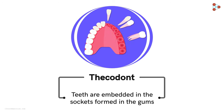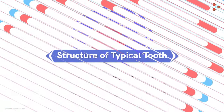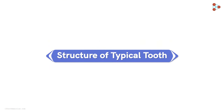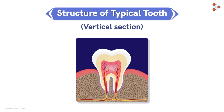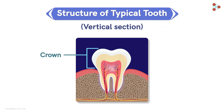Now, after having a glance at the gums, let's look at the actual tooth. This is what a typical tooth in a vertical section looks like. Let's begin from the top. This part, seen above the gums, is called the crown. So the part which we can see is the crown of our tooth.